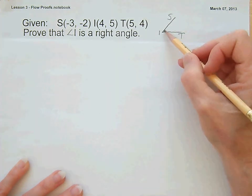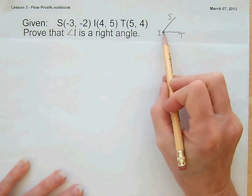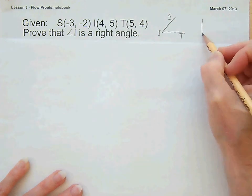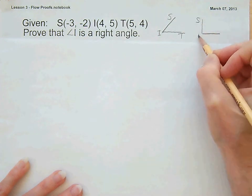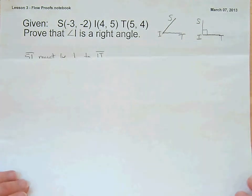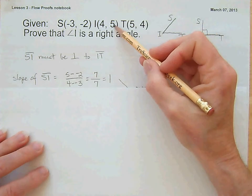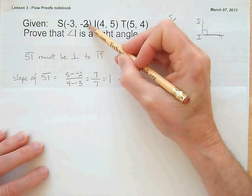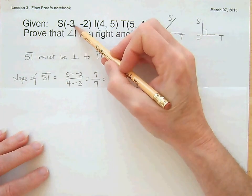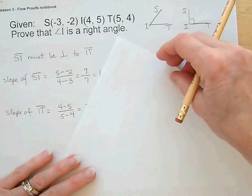If they are perpendicular to each other, that will be a right angle. If they're not perpendicular, they'll have some other angle. Let's figure out the slope of SI to see if it's perpendicular to IT. The slope of SI: 5 minus negative 2, that's 5 plus 2 which is 7, and 4 minus negative 3 is 4 plus 3, also 7. So the slope of SI is 1.